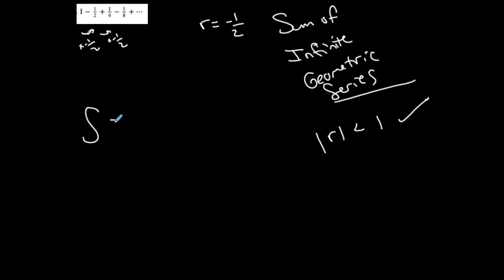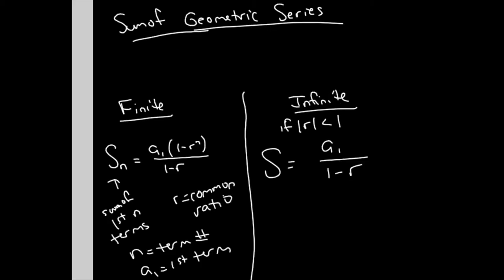So the sum of this series is A1, the first term, over one minus R. A1 over one minus R. Let me see if I can find that, right? A1 over one minus R.